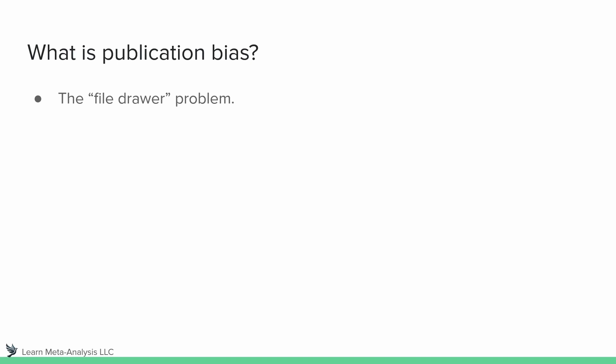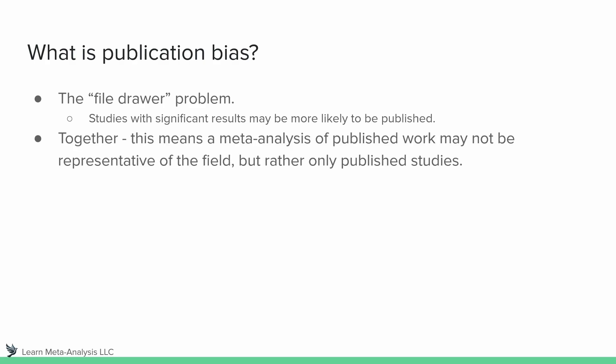We've probably heard of the file drawer problem, and what this refers to is that studies with significant results may be more likely to be published than those without. As somebody conducting a meta-analysis, you may not be able to locate those studies that didn't have significant results because they may not show up in public places where you can actually access them. So what this means is that the published work may not actually be representative of the field — it might only be representative of the published studies, which may be more likely to have statistically significant results.